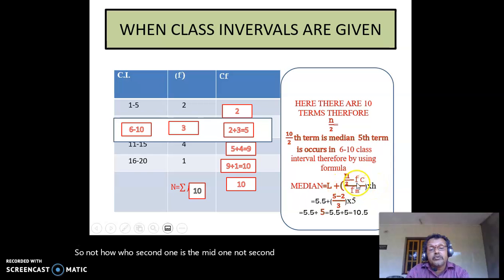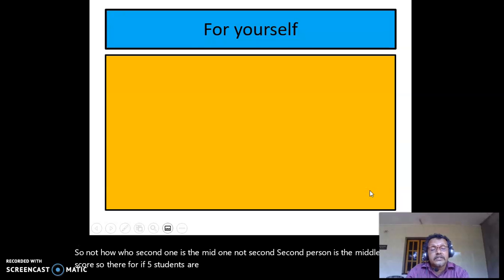L plus n by 2 minus FC by FM into H. Here, 5.5 - there is no continuity, so take 5.5 as the lower interval - plus 5 minus 2, which is 3 by 3, into 5. So 5.5 plus 5 equals 10.5, the median. In this formula, L is the lower interval, n is total frequency, FC is cumulative frequency of the previous class, FM is frequency of median class which is 3, and H is the size of the class interval which is 5. Therefore, the median is 10.5.